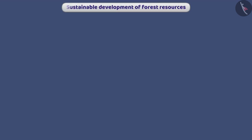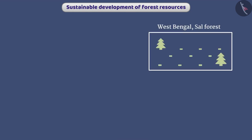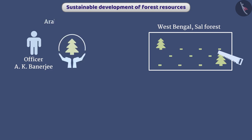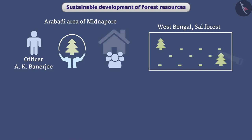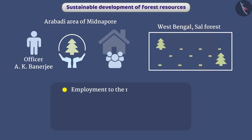Sustainable development of forest resources can be achieved. For example, in West Bengal, the Sal forest was badly damaged due to excessive exploitation. Officer A.K. Banerji started a strategy in the Arabari area of Midnapur, under which local people were involved in the work of conservation of forest, providing employment to rural people.